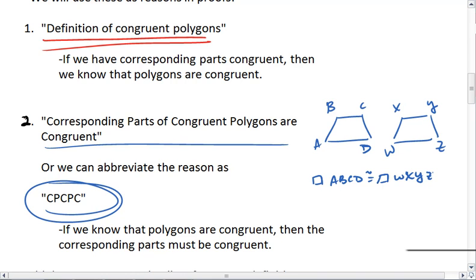Then I can conclude that any of the corresponding parts are congruent. So I know that angle A is congruent to angle W, I know angle D is congruent to angle Z, that side BC is congruent to side XY, and so on. And all of those are by CPCPC.